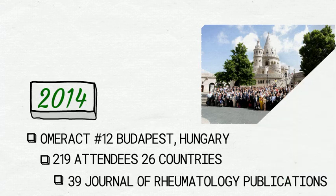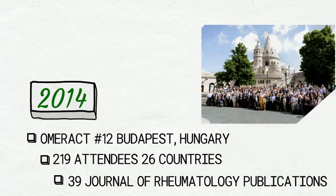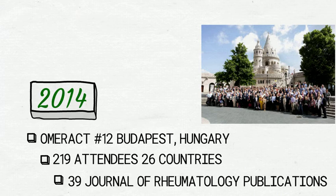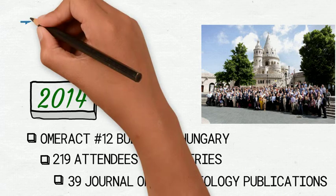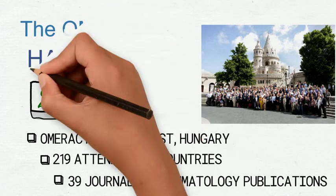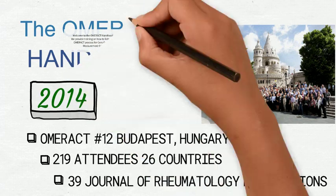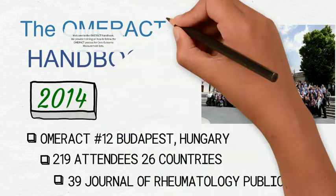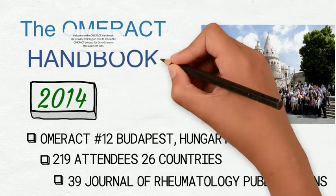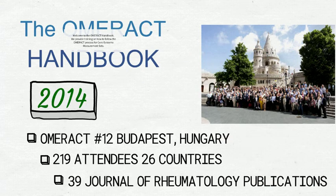OMERACT XII saw the further evolution of the OMERACT Filter 2.0, with its expansion from the original filter focused on tool development to the development of core outcome measurement sets, starting with the appropriate stakeholder group inclusion and development of core domain sets. The development of the OMERACT Handbook, which contains both methodological and organizational information, was created. The handbook provides a major reference resource for all those interested in outcome measure development.